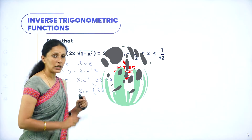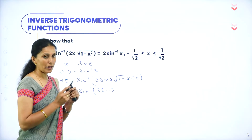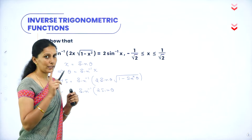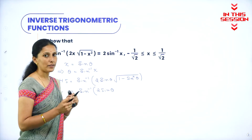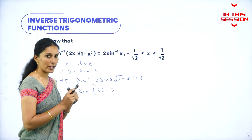1 minus sine square theta can be written as cos square theta because sine square theta plus cos square theta is 1. So 1 minus sine square theta can be written as cos square theta.